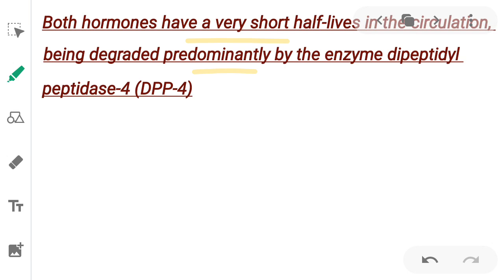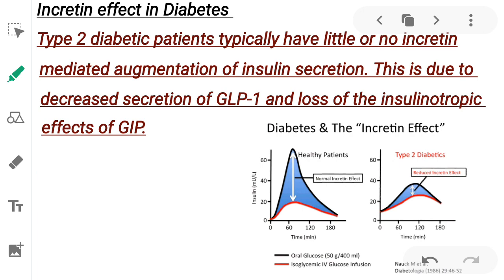Both of these hormones have a very short half-life. They are degraded by the enzyme dipeptidyl peptidase 4 (DPP4).